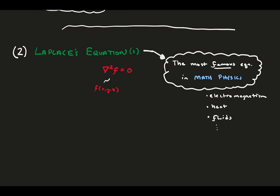In the context of fluids, we have two specific functions that can satisfy the Laplace equation. First, the velocity potential, and the second is the stream function.